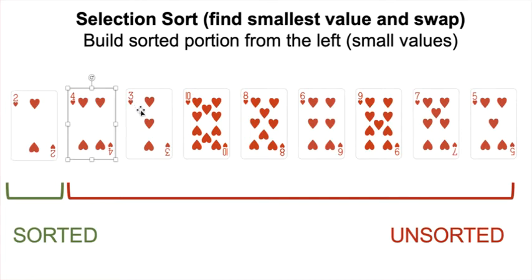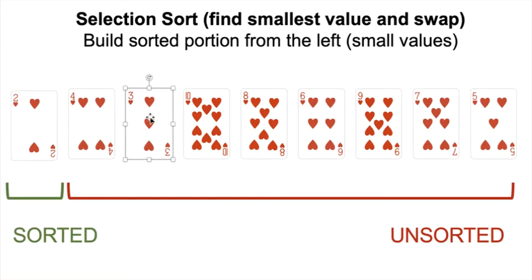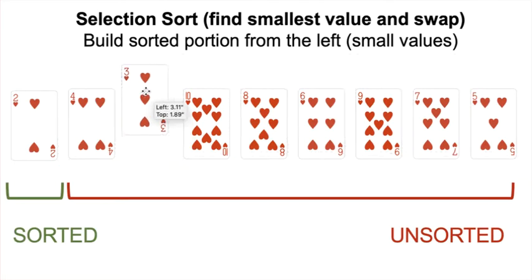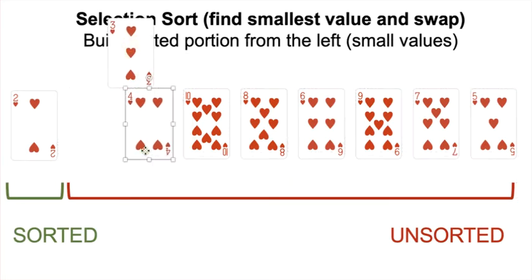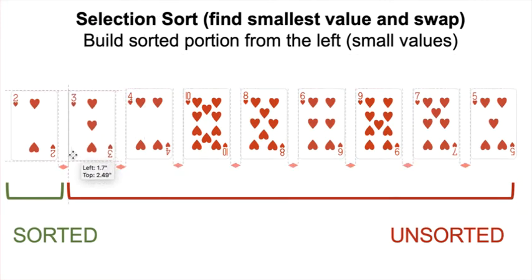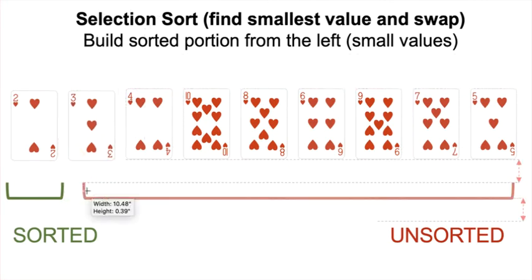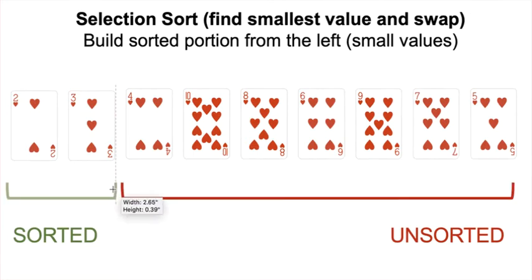Is 3 smaller than 4? Yes — 3 is our new smallest. 10 smaller than 3? No. 8 smaller than 3? No. 6 smaller than 3? No. 9 smaller than 3? No. 7 smaller than 3? No. 5 smaller than 3? No. So 3 is the smallest element in our unsorted portion. We swap it with the first element in the unsorted portion. Unsorted shrinks by 1, sorted grows by 1 — that was the second pass.